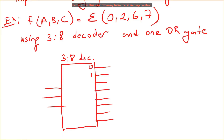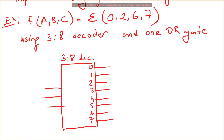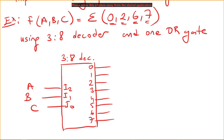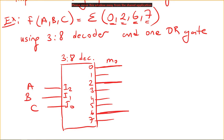The outputs are zero through seven. We connect our variables: a to i2, b to i1, and c to i0 of the decoder. We have minterm zero, minterm two, minterm six, and minterm seven. If a, b, c are all zero, we get minterm zero.